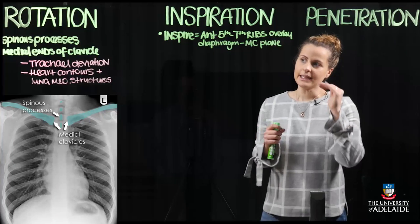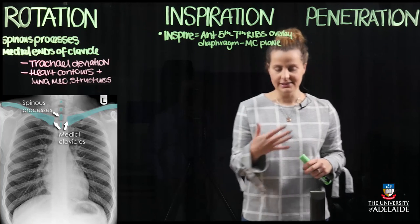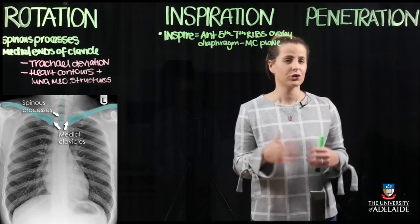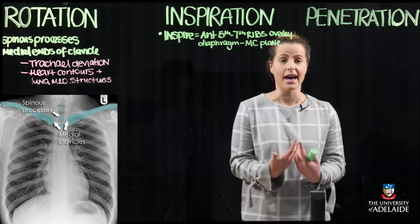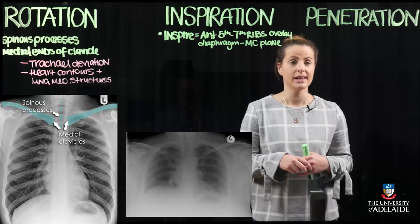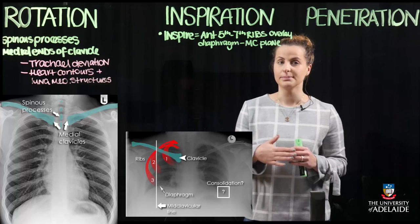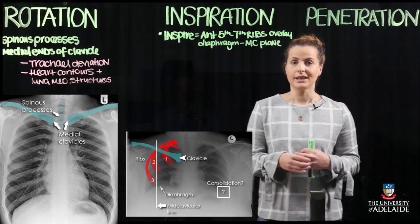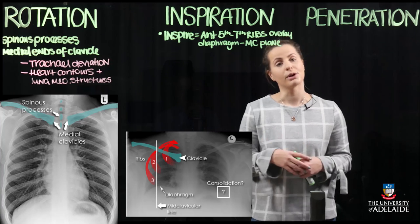If inspiration is incomplete, the telltale signs are exaggeration of the lung markings and increased density associated with the lung parenchyma, presenting as more hyperdense due to less air filling the lungs. The image below shows a typical CXR taken in an expired state — counting the ribs, it is the anterior aspect of the third rib that is intersecting the diaphragm in the mid-clavicular plane, which is clearly not in accordance with the gold standard of ribs five through to seven.